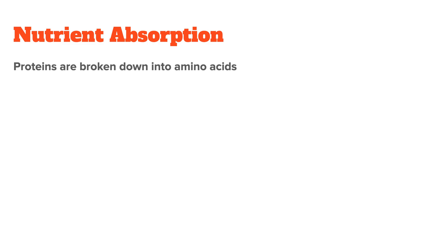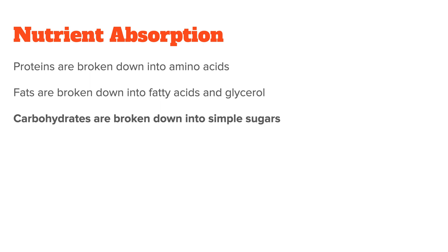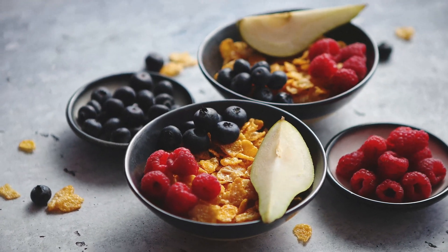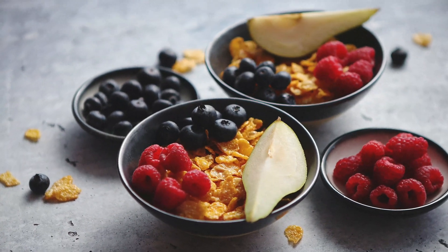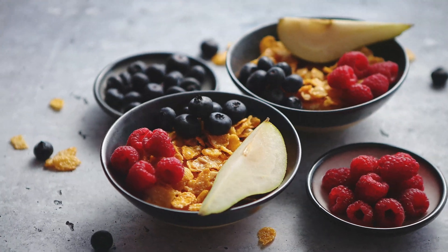For example, the macronutrients are broken down as follows: proteins are broken down into amino acids, fats are broken down into fatty acids and glycerol, and carbohydrates are broken down into simple sugars. The micronutrients — so vitamins and minerals — are absorbed a little differently, but we will get to that later.